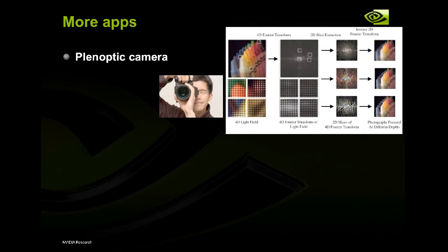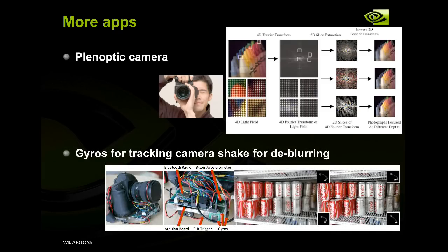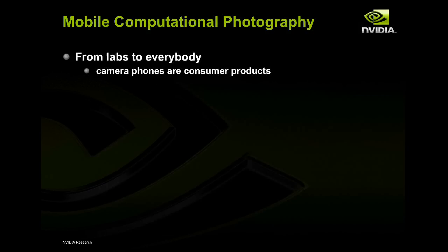A pretty cool application modifies the camera so there's a regular sensor and a small array of tiny lenses in front of it. What you get is that you record different directions of light, and then as post processing, you can refocus the image after the fact at different distances. Or with another contraption, the camera is wired together with sensors so you can figure out exactly how the camera moves as you take the image, and then a blurry image can be de-blurred if you know exactly how the camera moved.